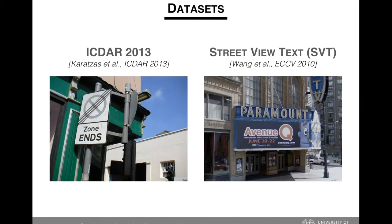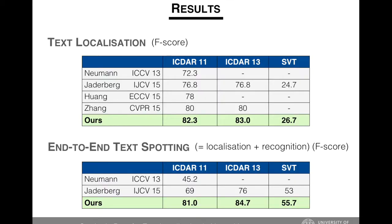Our method is evaluated on popular text datasets such as the ICDAR dataset and the Street View Text dataset. These datasets contain text on street signs and boards as seen here. We improve upon the previous state-of-the-art methods by a large margin on both datasets — on both the text localization task as well as the end-to-end text spotting task, which involves the recognition of text in addition to localization.